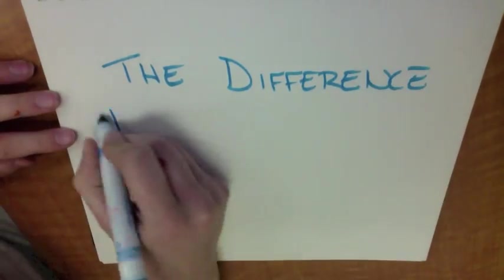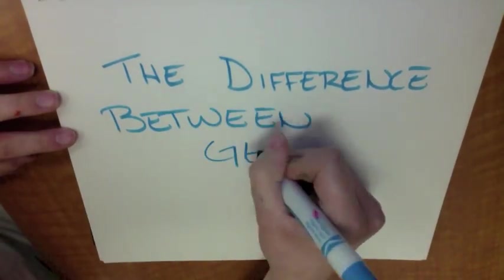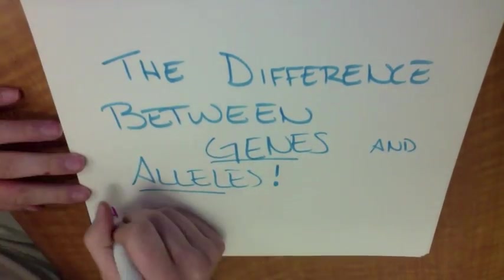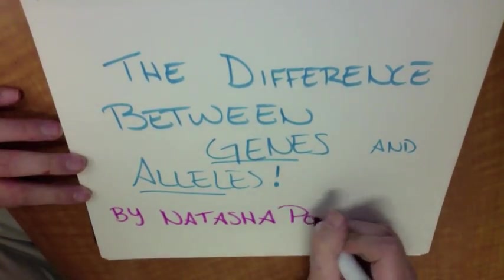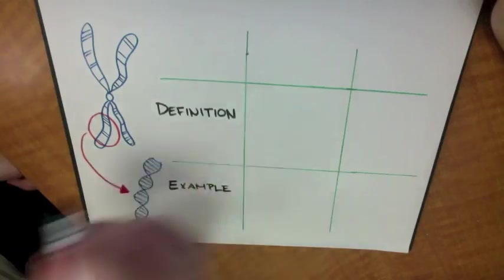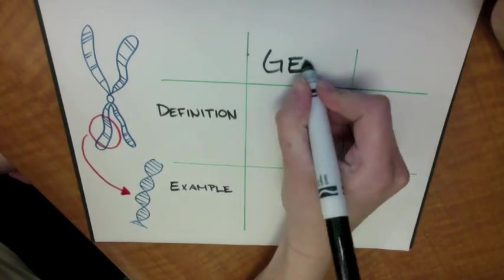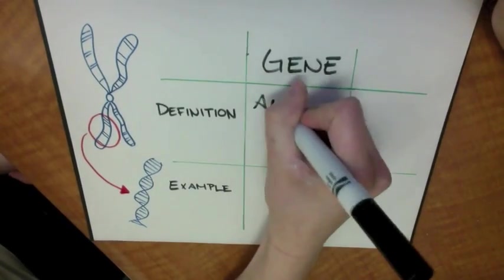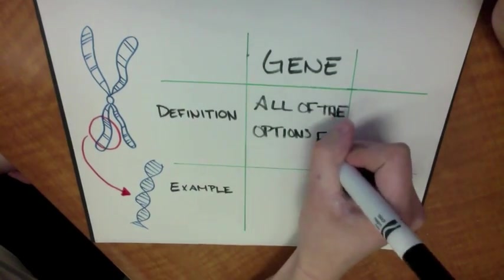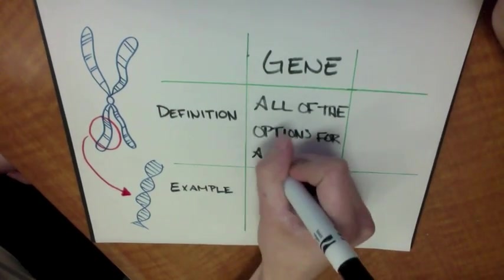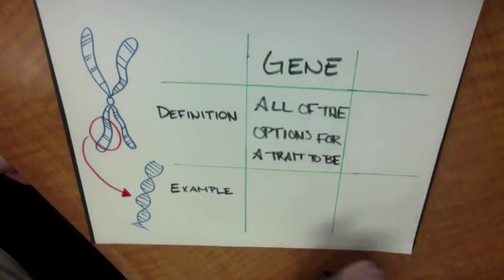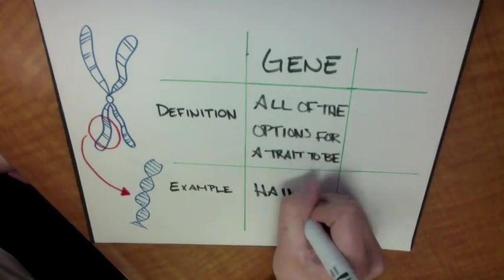The Difference Between Genes and Alleles, by Natasha Porfirio and Amanda Radley. What is a gene? Genes are all of the options for a trait to be, like hair color passed down from your parents.